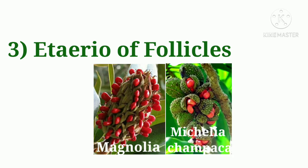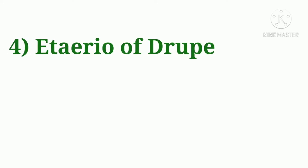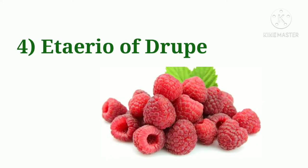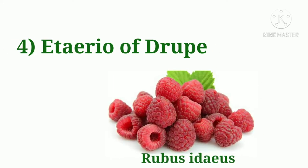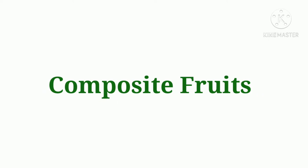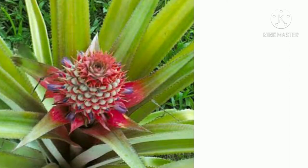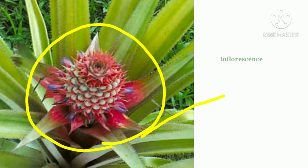The etaerio of follicles type fruit is seen in Magnolia grandiflora and Michelia champaka as examples. Next is the etaerio of drupes — for example, Rubus species.